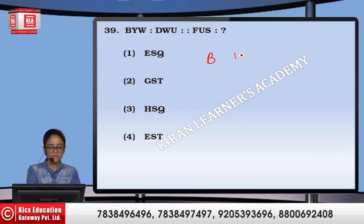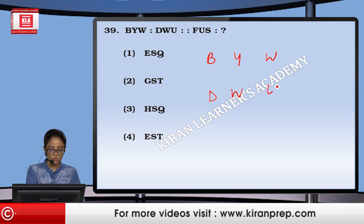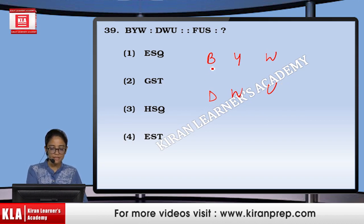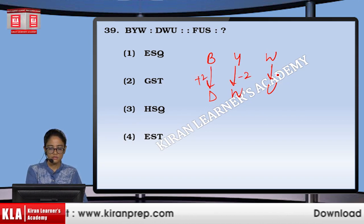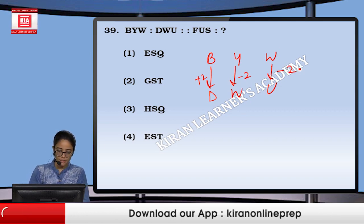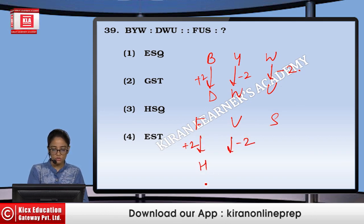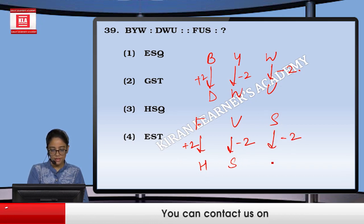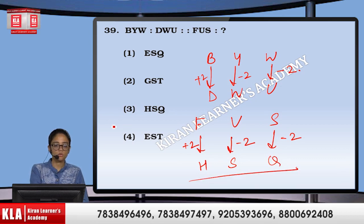Next, B, Y, W goes to D, W, U. The pattern is B to D is plus 2, Y to W is minus 2, W to U is minus 2. Similarly, for F, U, S: plus 2 gives H, minus 2 gives S, and minus 2 gives Q. That means option number 3.